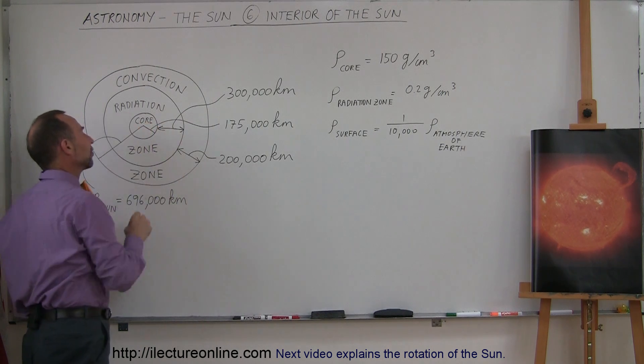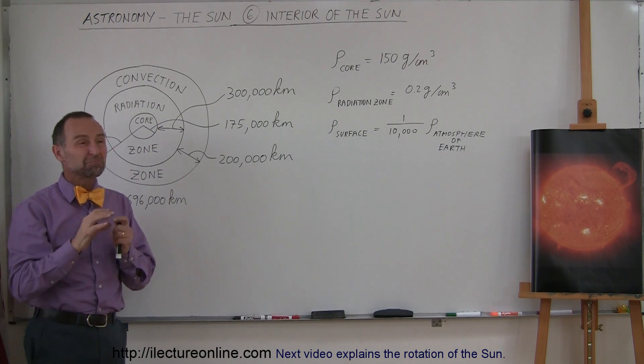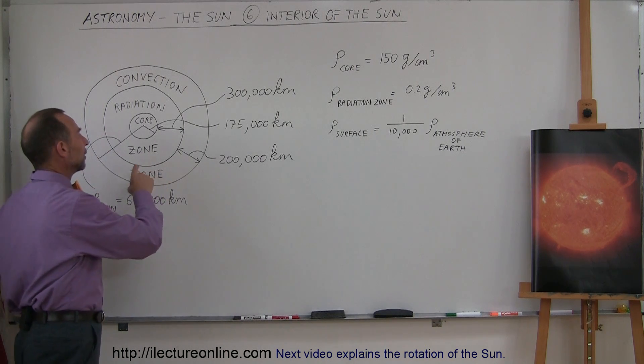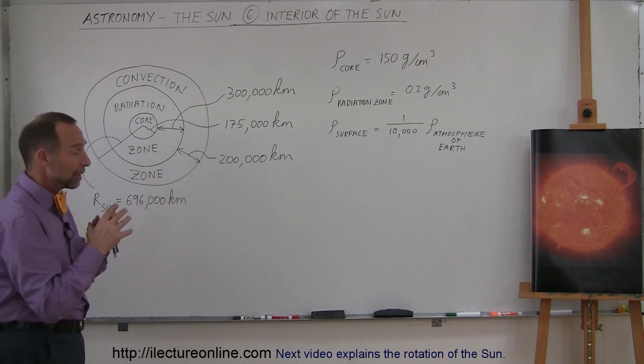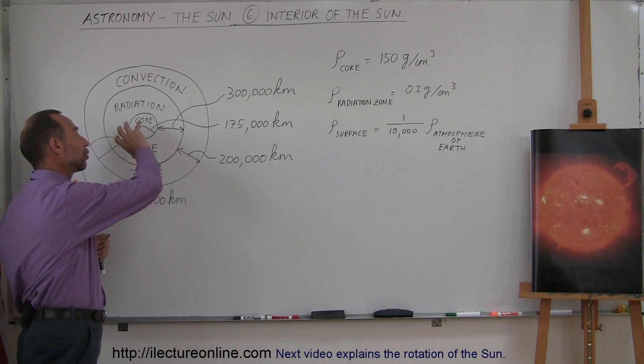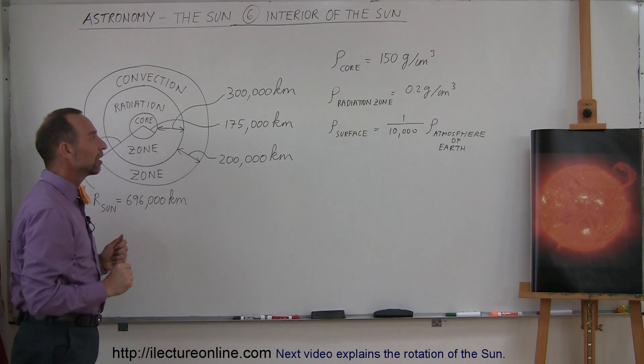We have the central core of the Sun, which only takes up about 2% to 3% of the total volume of the Sun. Of course, it's really dense there, so even though it has a very small volume, it actually has quite a bit of mass because the density there is quite high.